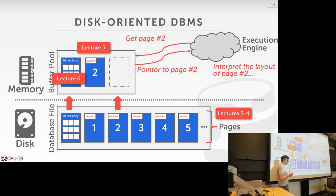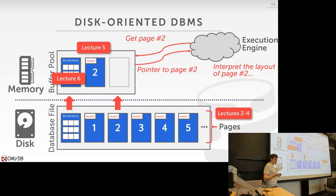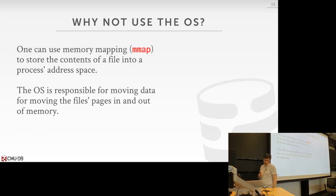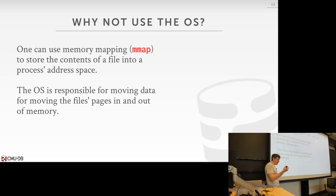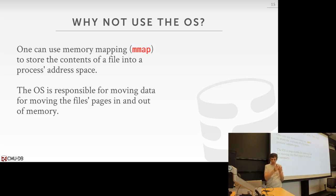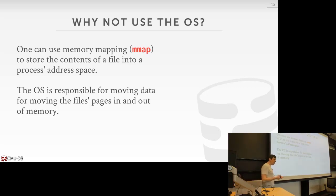This sounds like virtual memory from an OS course — making it appear we have more memory than we actually do. In OS parlance this is called memory-mapped files, using the mmap syscall. You tell the OS to map a file's pages into your process's address space, then read and write those memory locations. If the data isn't in memory, the OS brings it in; you can call msync to write it back to disk.